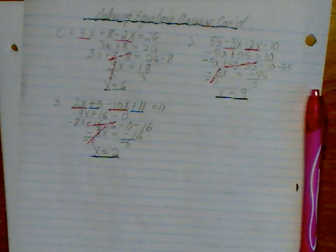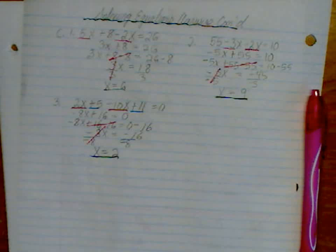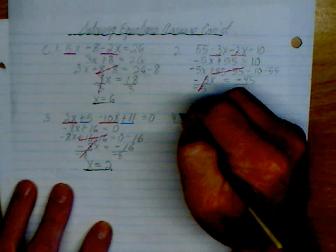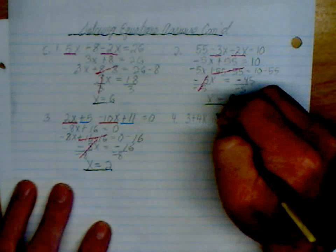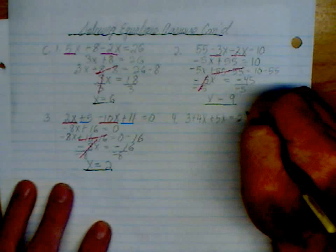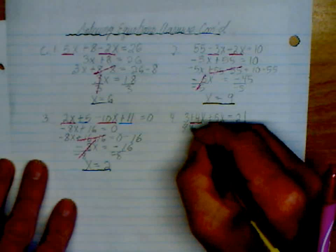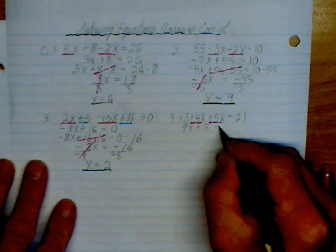Number 4. 3 plus 4x plus 5x is equal to 21. Let's collect our collectibles. 4 and 5 is 9x plus this 3. Don't forget there's a plus sign. Is equal to 21.